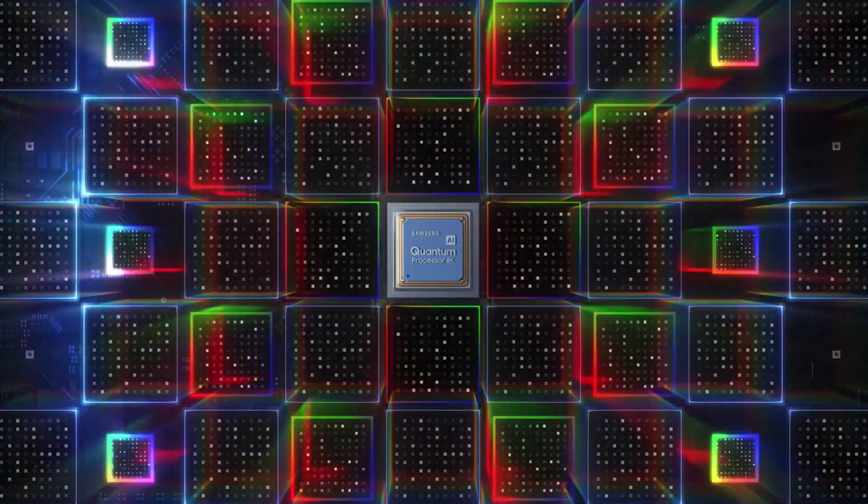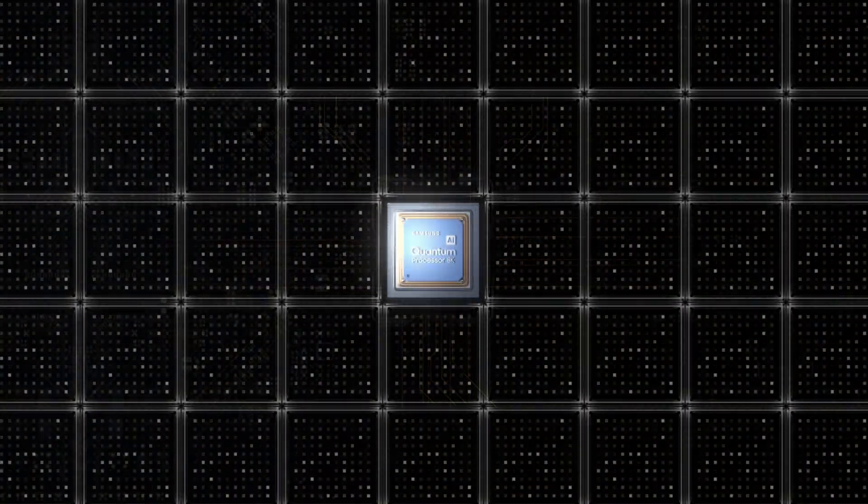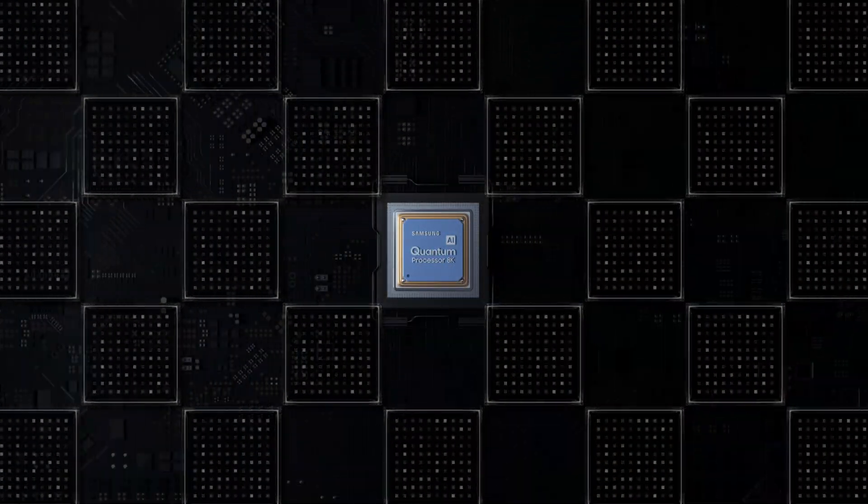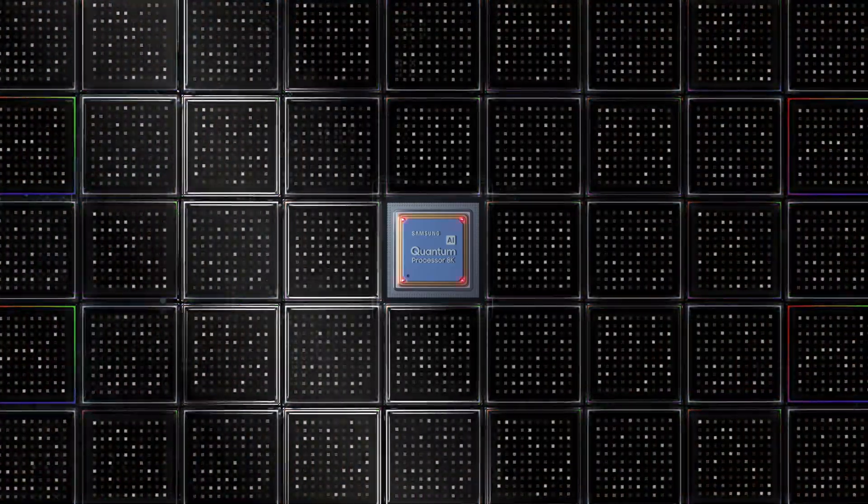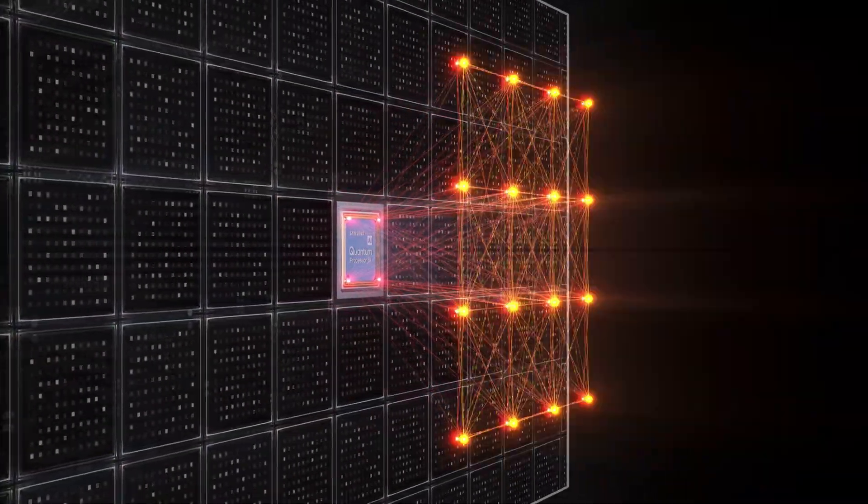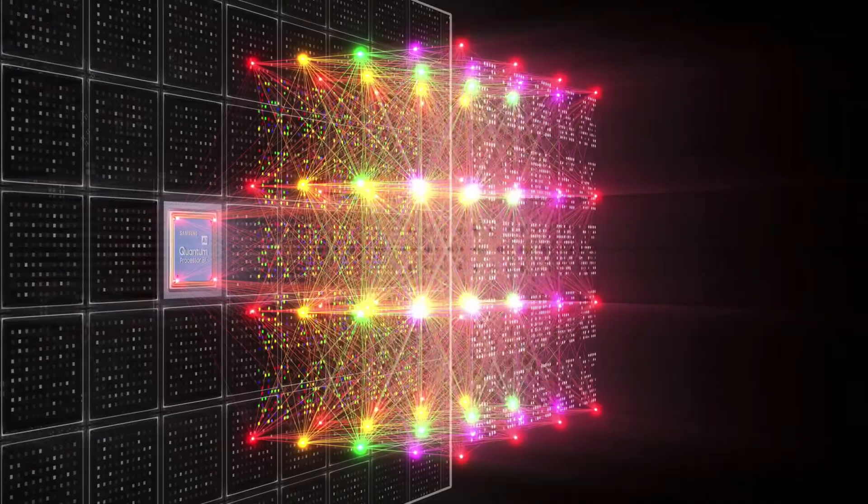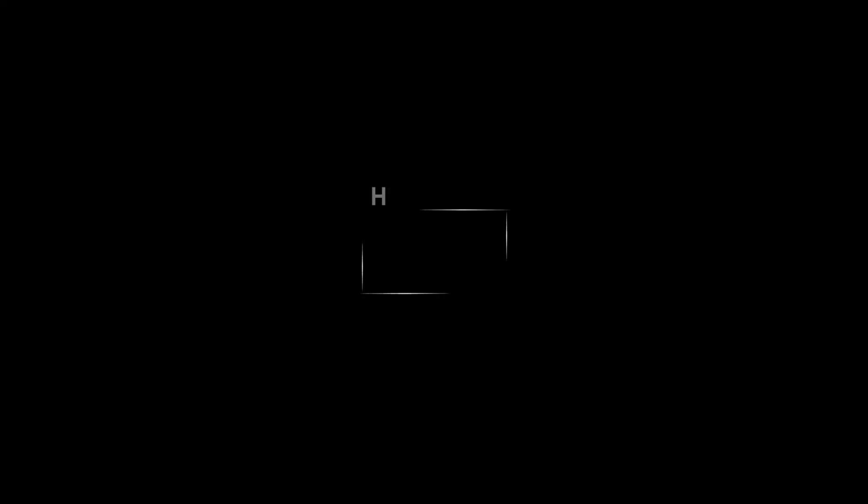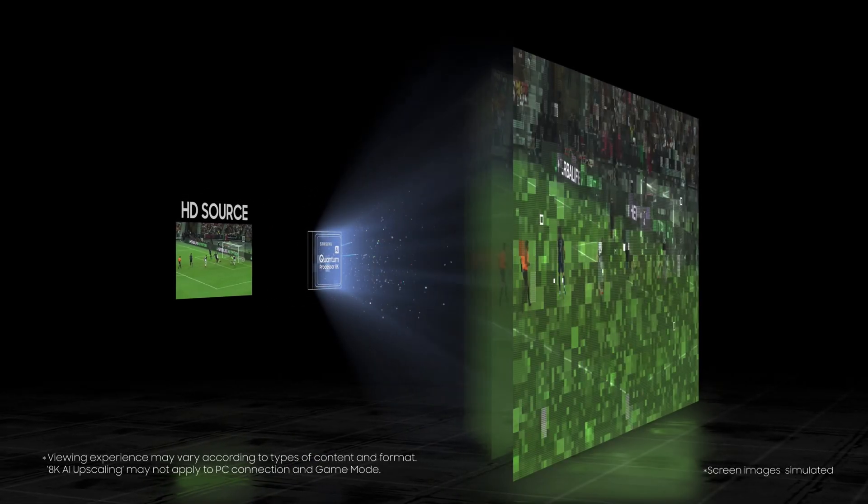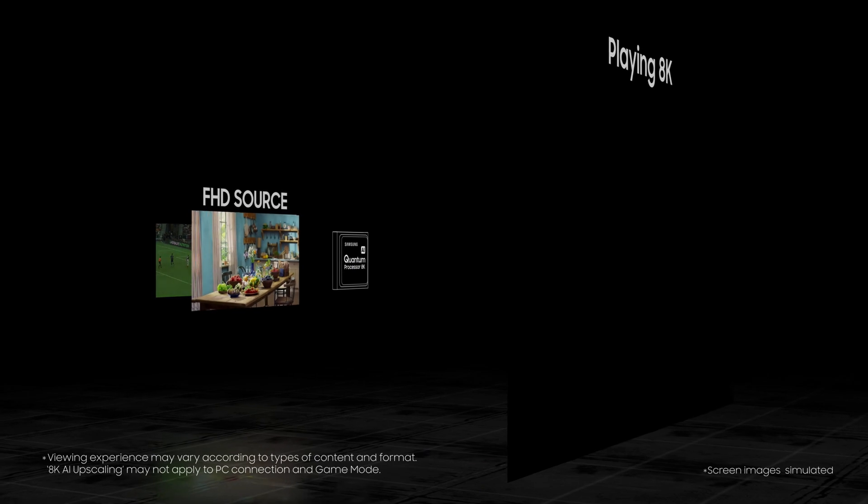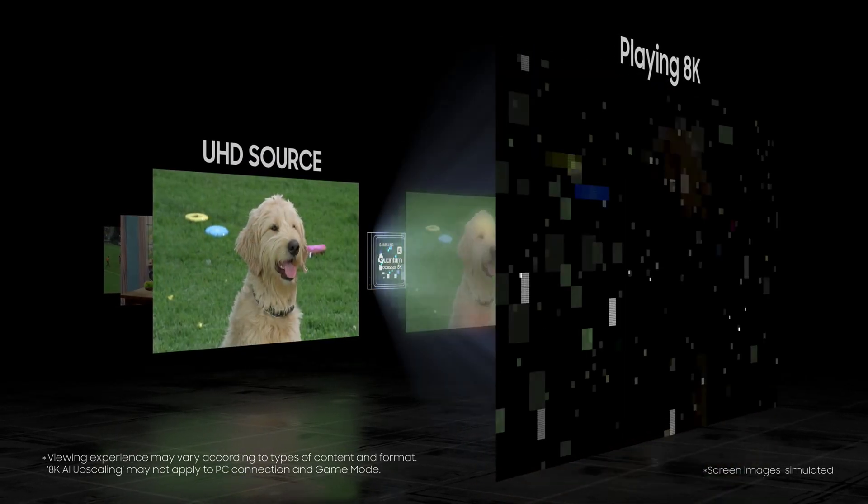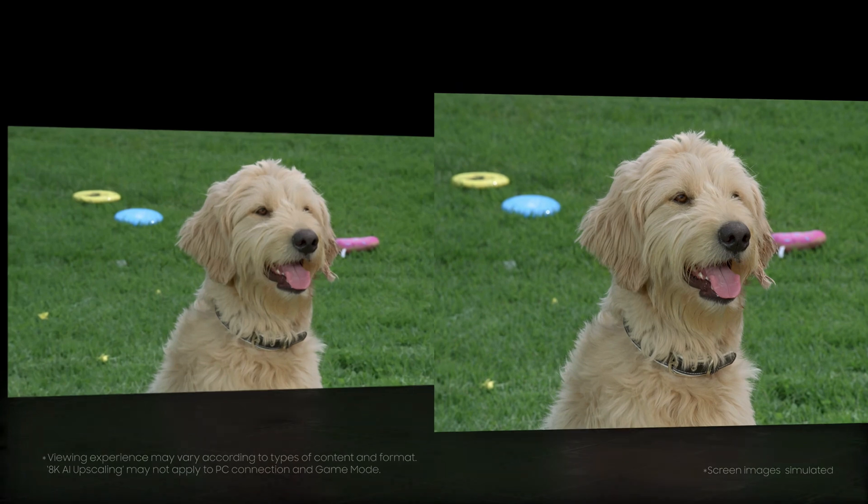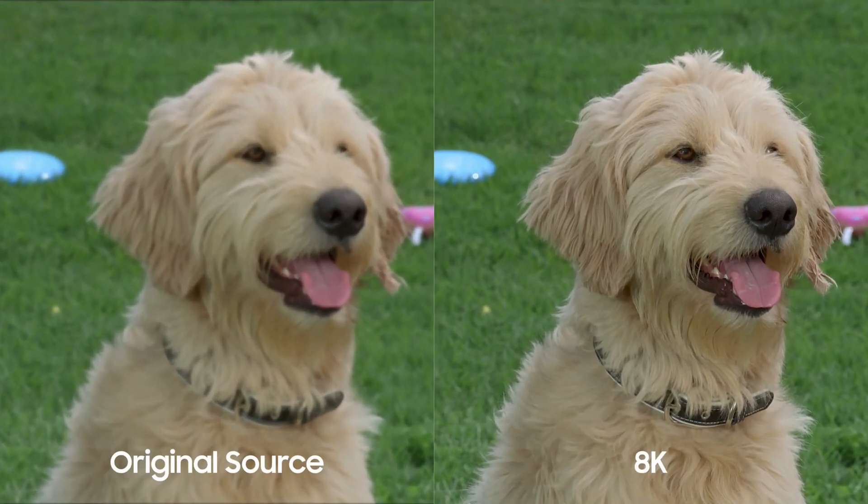But what truly drives the 8K aspect of these televisions is the intelligence behind the screen. Processors like Samsung's Quantum 8K use AI to artificially scale any source media into a simulated 8K output, down to each individual pixel, using advanced algorithms to stitch in additional detail where it sees fit, generating the highest resolution image possible. So even without native 8K content, media can be upscaled for a better viewing experience across the board.